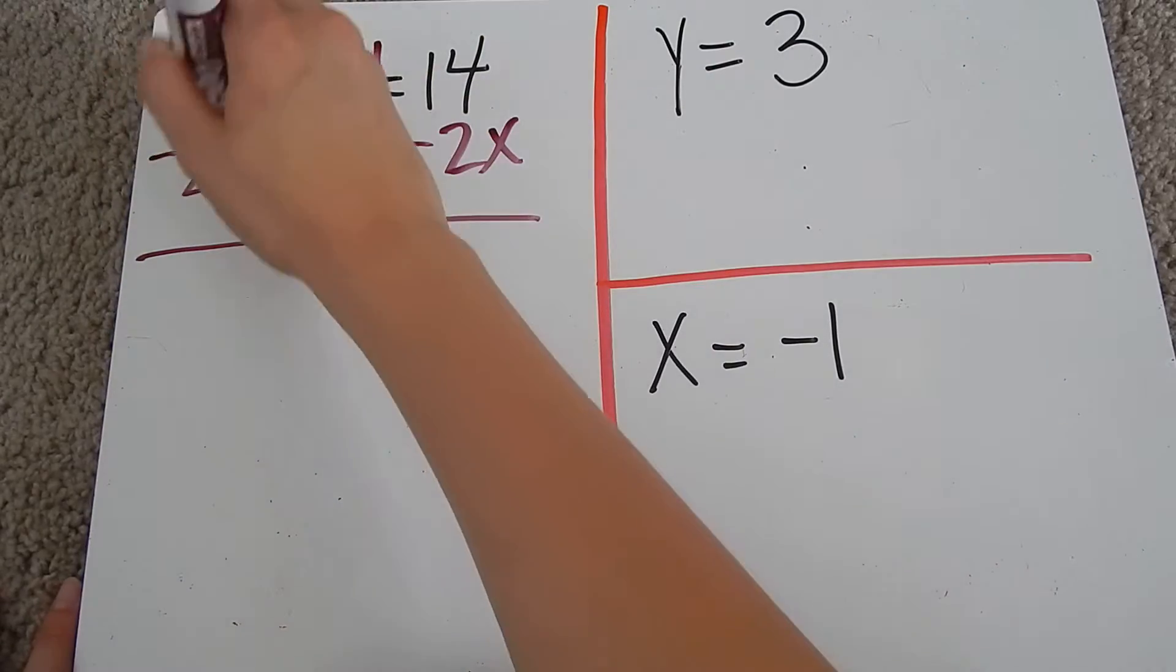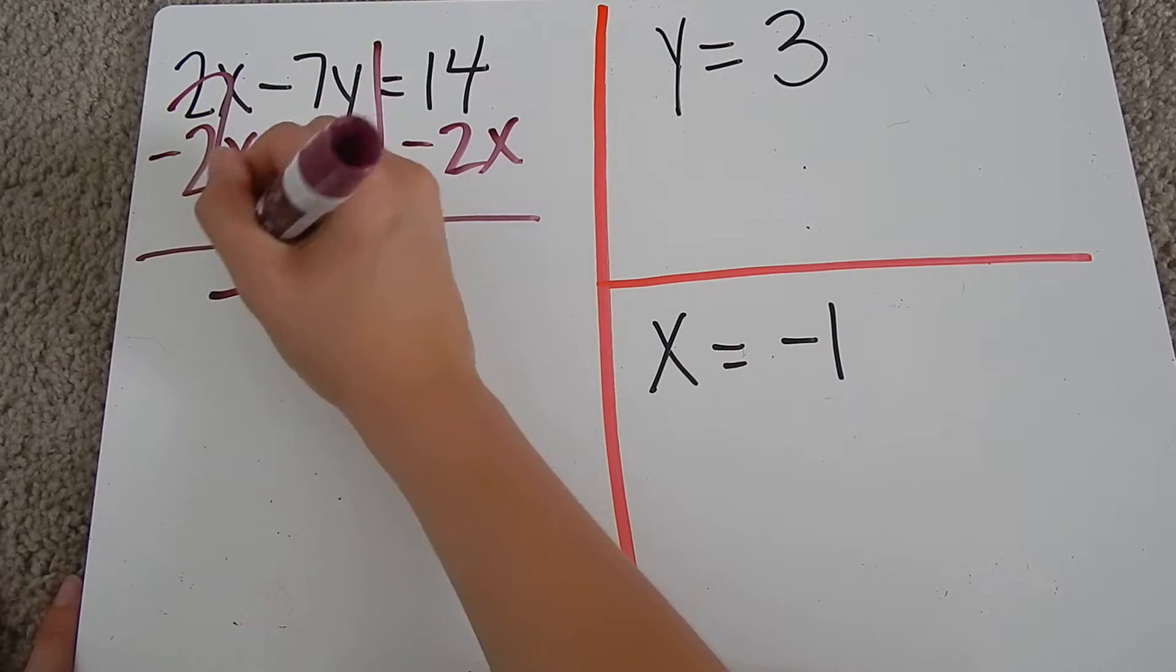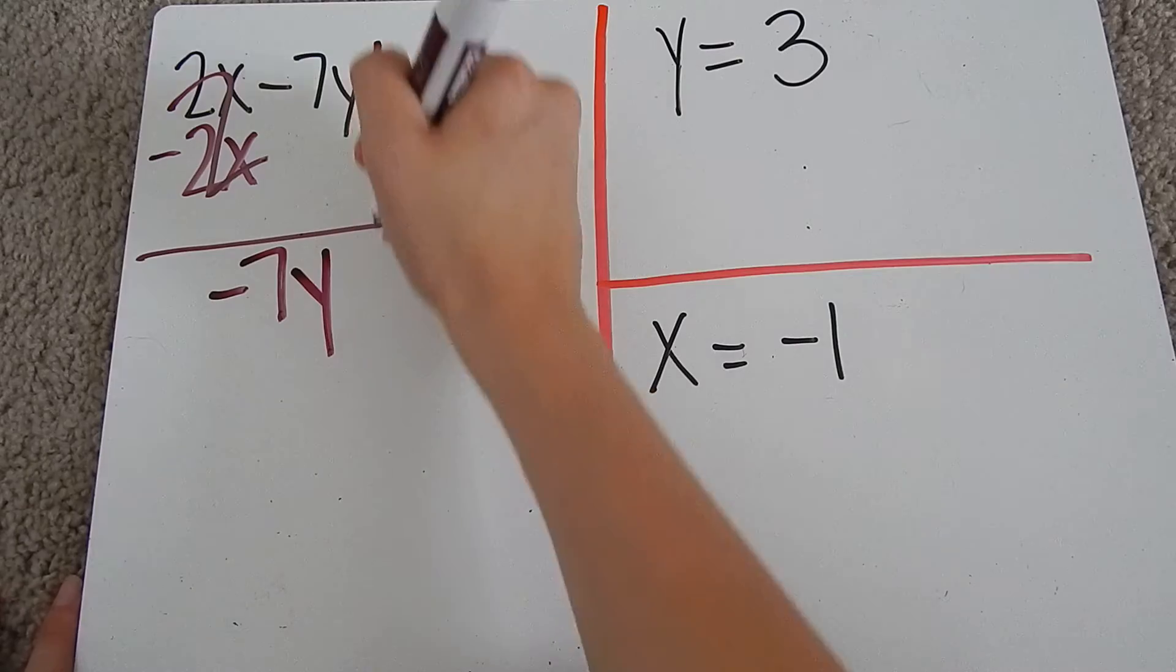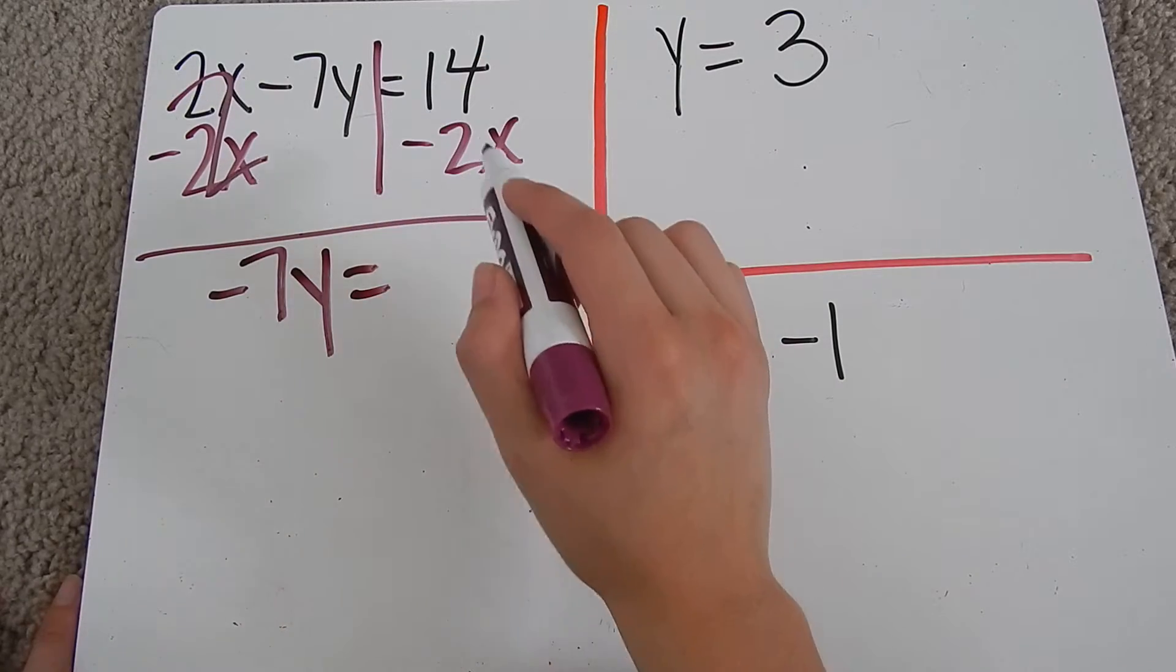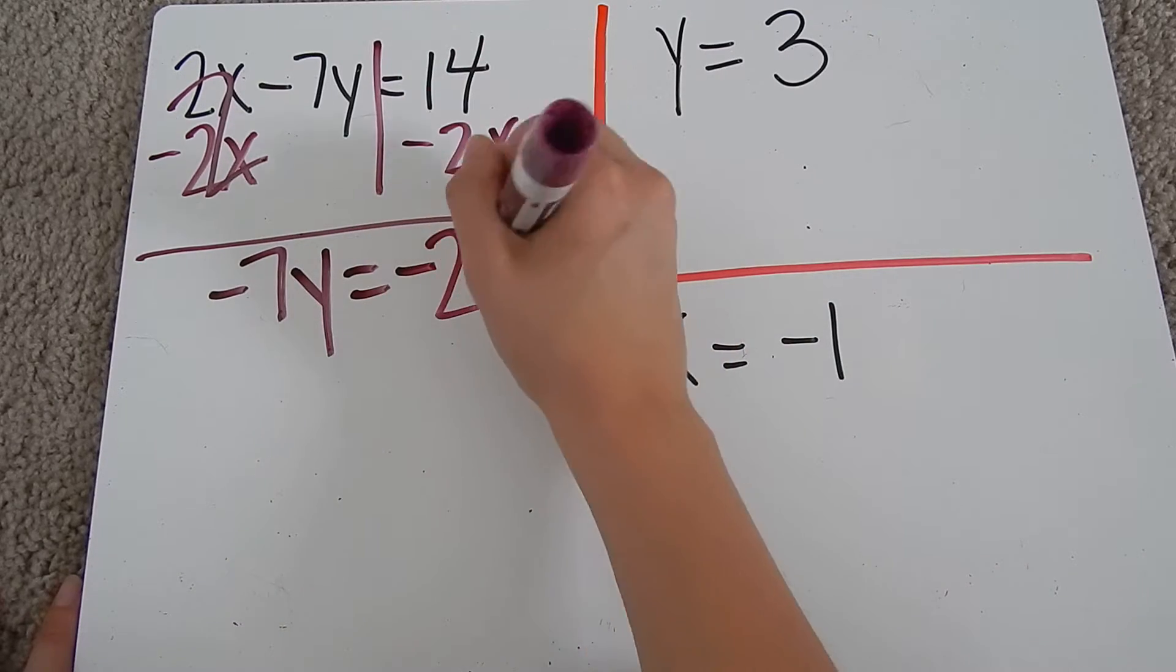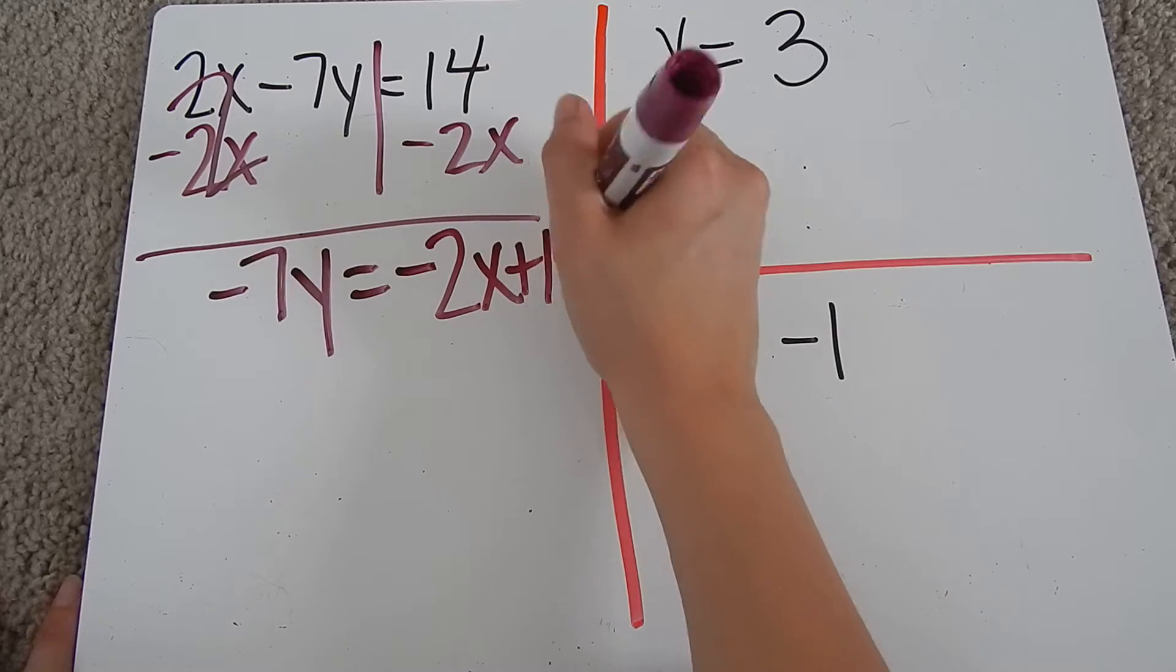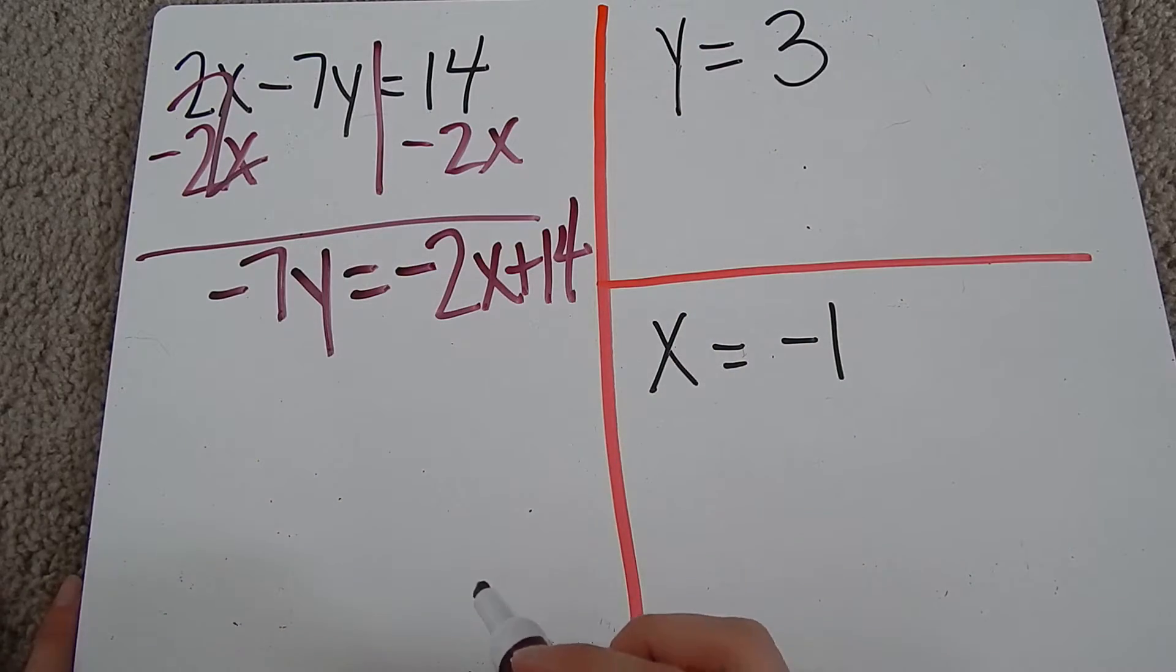When I subtract 2x from 2x, those will zero out. Bring down my negative 7y, bring down my equal sign, and here I'm going to put it in my mx plus b form, which means I'm going to take my negative 2x and write it first. And then it will be plus 14, since the 14 is positive there.